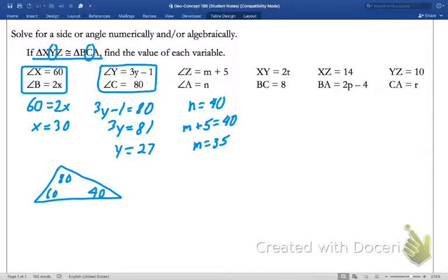All right. Let's go back to our relationship. XY is 2T. BC is 8. Those sides match up. 2T equals 8. T is equal to 4.